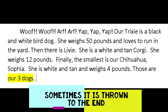Our Trixie is a black and white bird dog. She weighs 50 pounds and loves to run in the yard. Then there's Livy. She's a white and tan corgi. She weighs 12 pounds. And finally, the smallest is our Chihuahua Sophia. She's white and tan and weighs 4 pounds. Those are our three dogs.